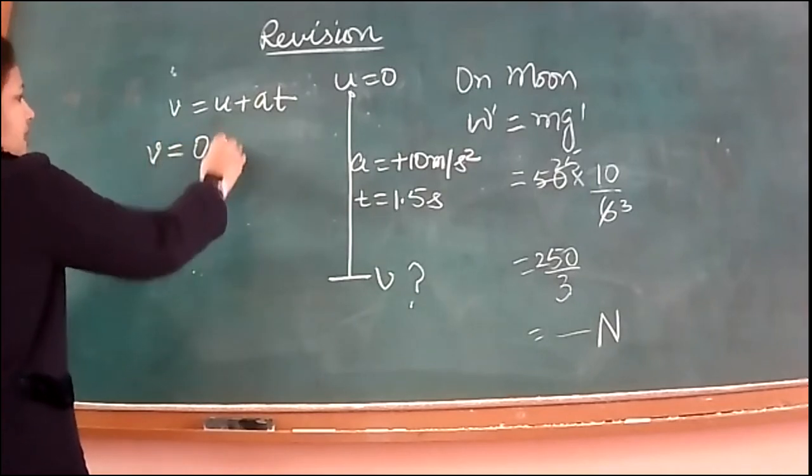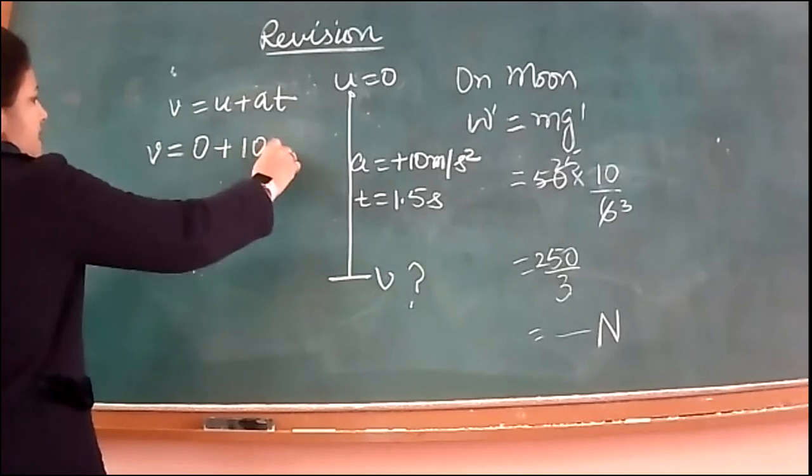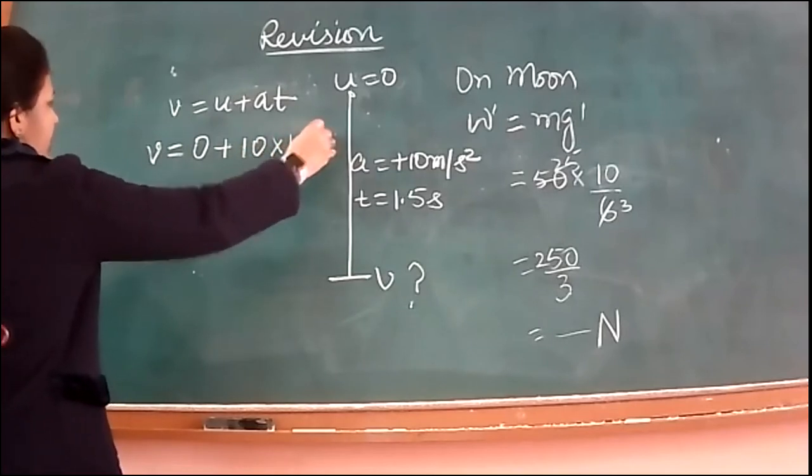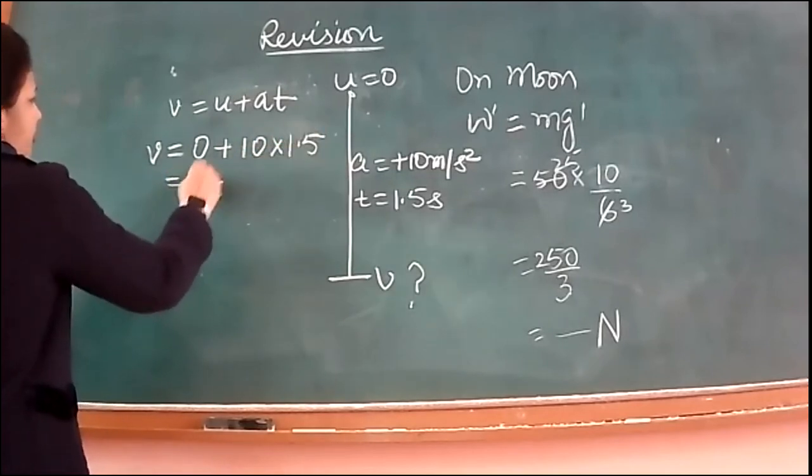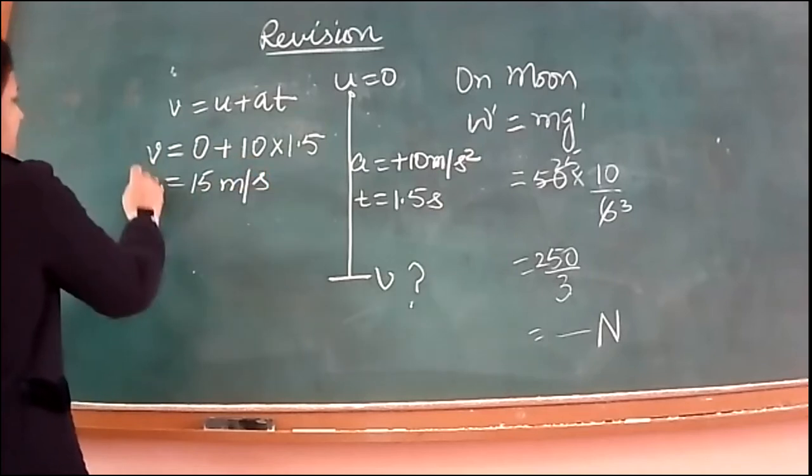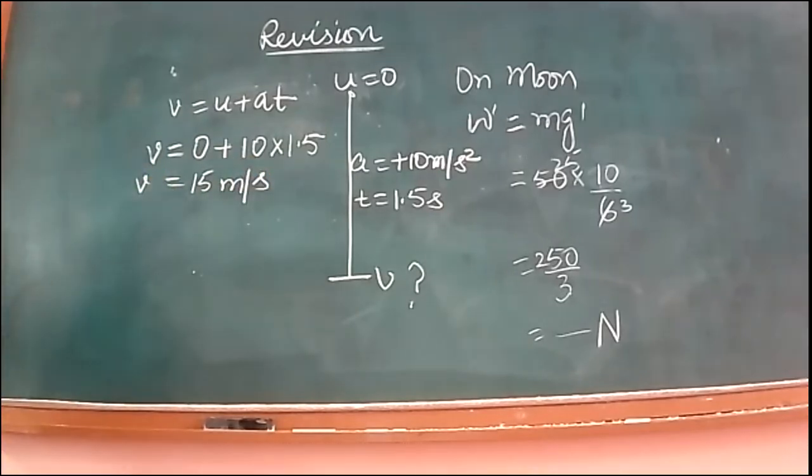So we will apply first equation of motion. V equal to u plus a t to find velocity on striking the ground. Now u is 0 for free fall, a is 10 and t is 1.5 seconds. So your velocity is 15 m per second on reaching the ground. We have found the first part. So we have calculated the first part. Is that okay? First part ho gaya?